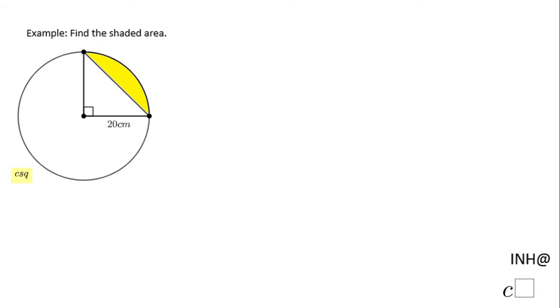Welcome back, I'm at C squared. In this example, you need to find the shaded area, this yellow area. In this case, you need to be aware that first you need to find the area of the sector, then you have to find the area of the triangle, and then you subtract them to get the shaded area.